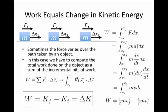If the final kinetic energy is larger than the initial kinetic energy, then positive work is done. If the final kinetic energy is less than the initial kinetic energy, then negative work is done. If the final kinetic energy equals the initial kinetic energy, in other words, it's moving at the same speed all the way throughout, then zero work is done.